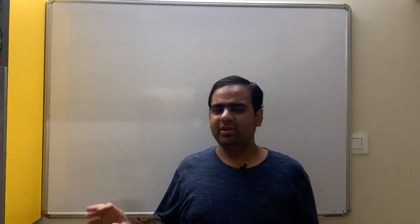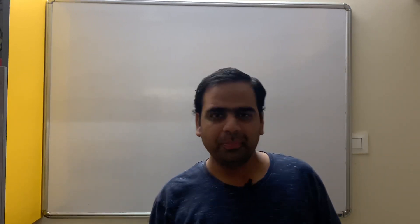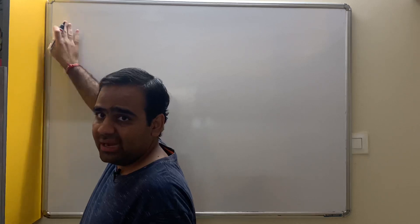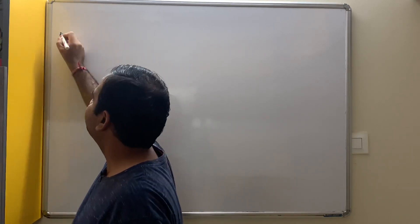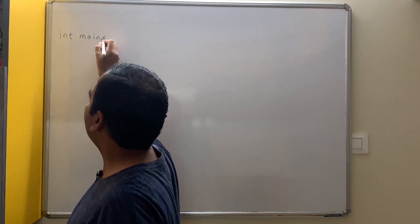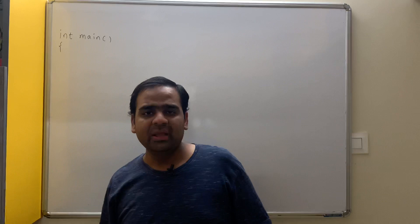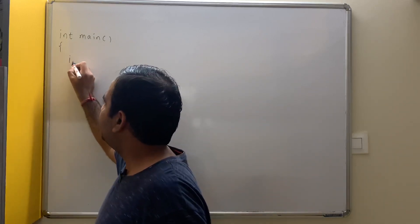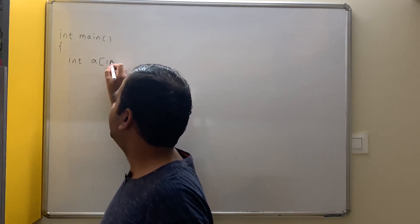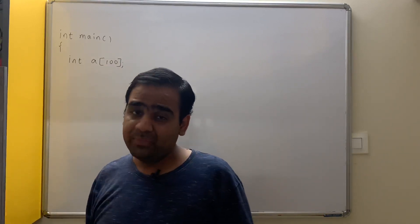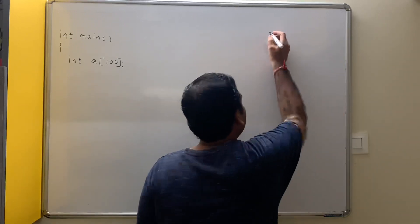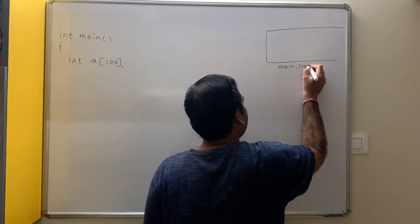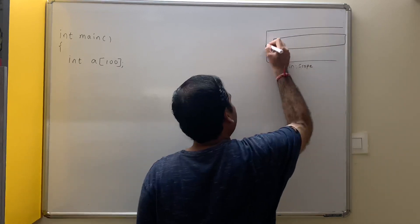Now let us see how do we write the code to find all the prime numbers in an array and count them. Initially you write hash include stdio.h and math.h, as we may need it. Then int main. The input for this program is an array, so let us declare int a of 100. Whenever you declare int a of 100, there are 100 elements indexed 0 to 99.